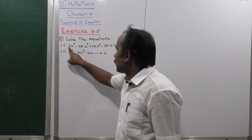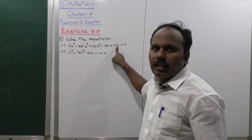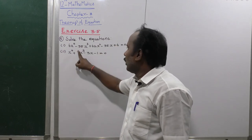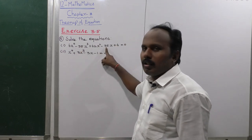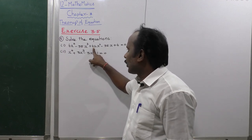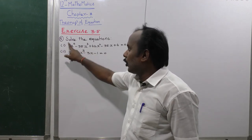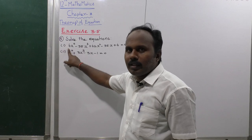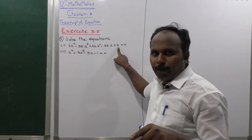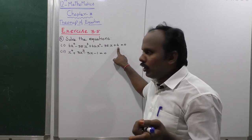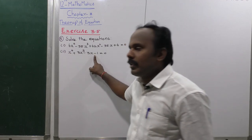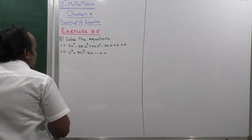This is a Type 2 reciprocal equation; this is a Type 1 reciprocal equation. Why? Because for the first equation: 6 and the last coefficient is also 6 — the same number, same sign. That is Type 1. Minus 35 and minus 35 — Type 1. The coefficient of x⁴ and the constant are the same: that is the important property of a reciprocal equation.